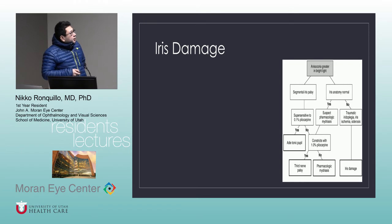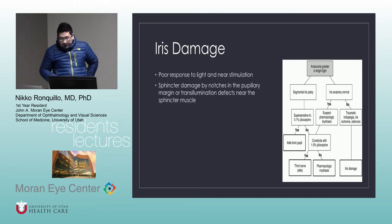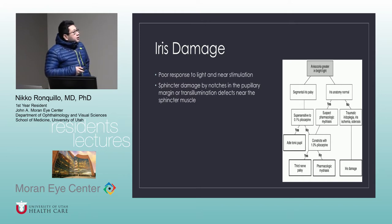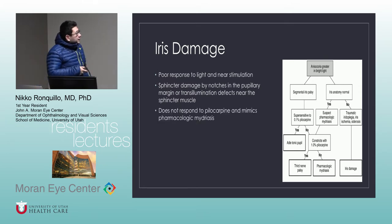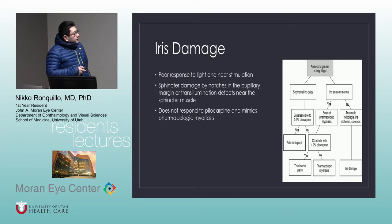In the pathway of anisocoria greater in bright light, we first ask whether there is iris damage. If there's iris damage, we can see it anatomically — is iris anatomy normal? If not, there's iris damage. It does not respond to pilocarpine and mimics pharmacologic mydriasis. Other signs include notches in the pupillary margin or transillumination defects near the sphincter muscle.